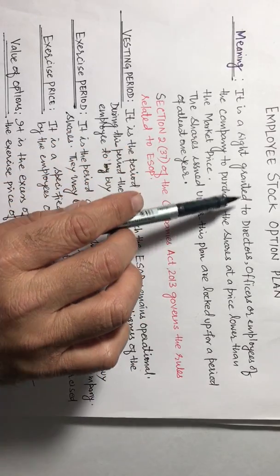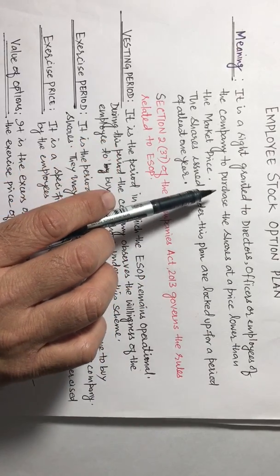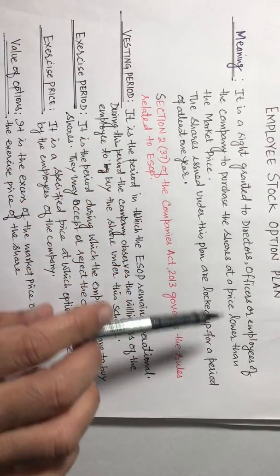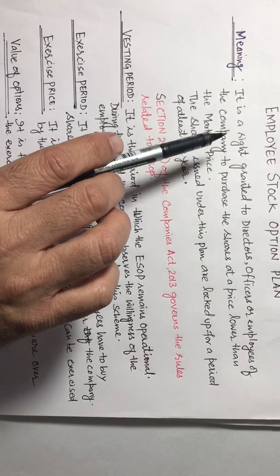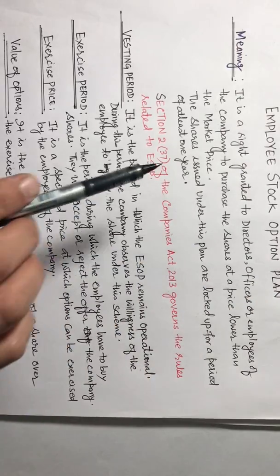So this plan under which the directors, officers, or employees of the company are offered the shares at a price lower than the market price, this right or this plan is known as Employee Stock Option Plan.